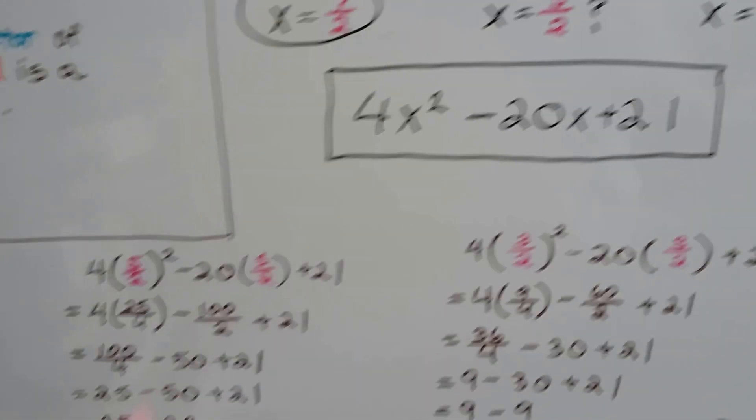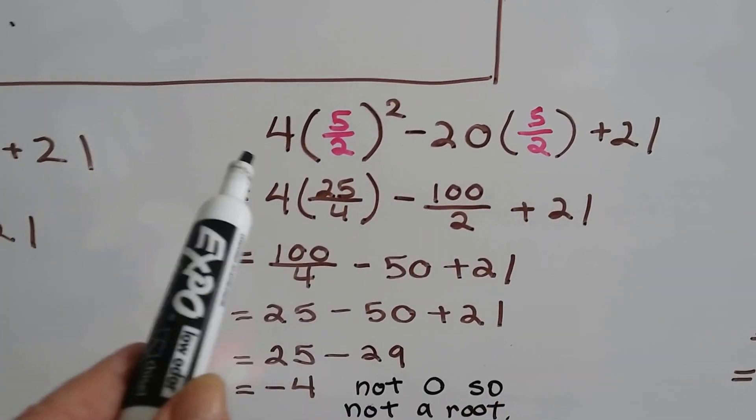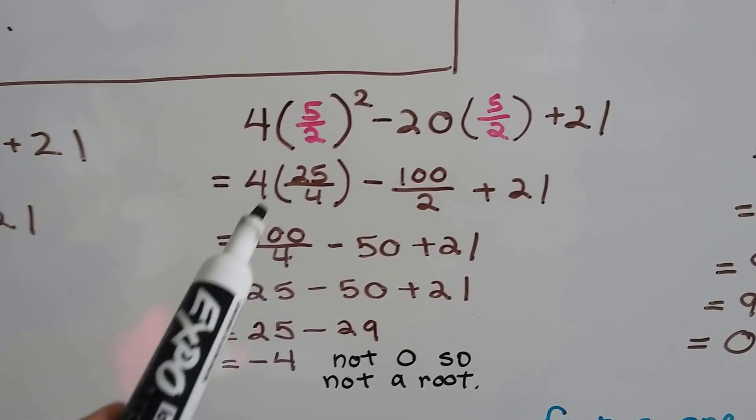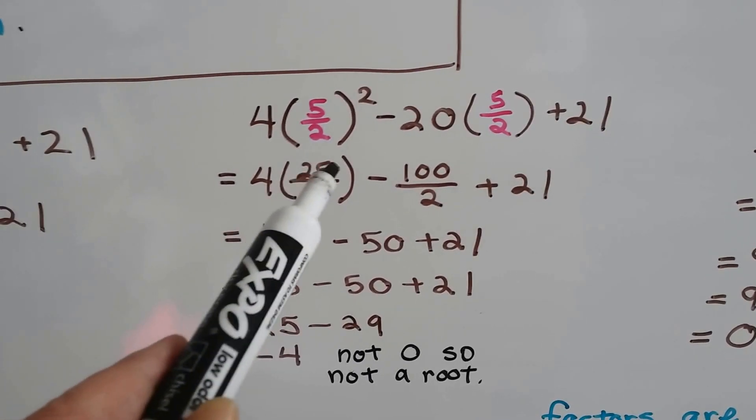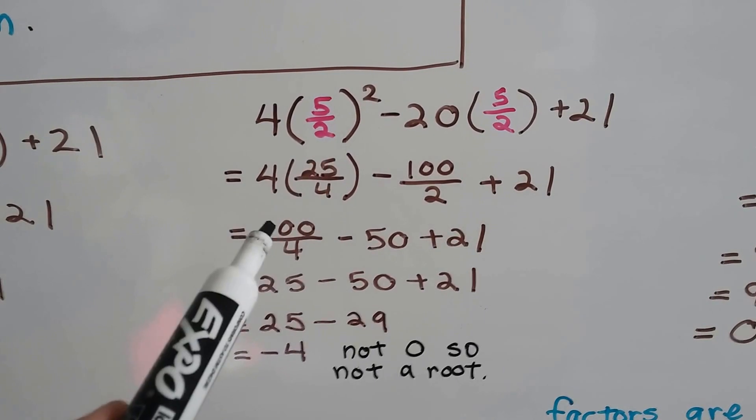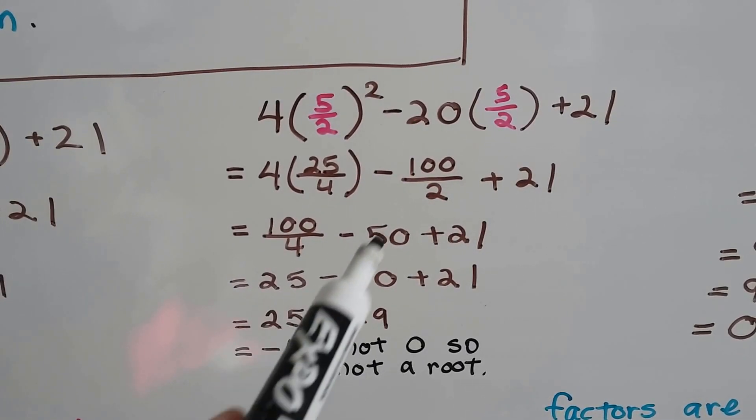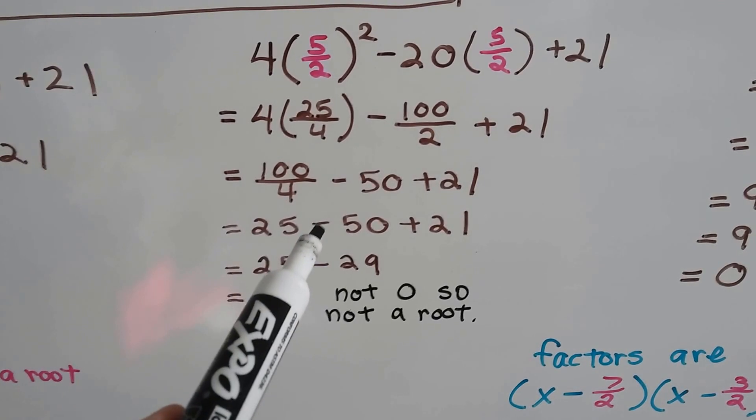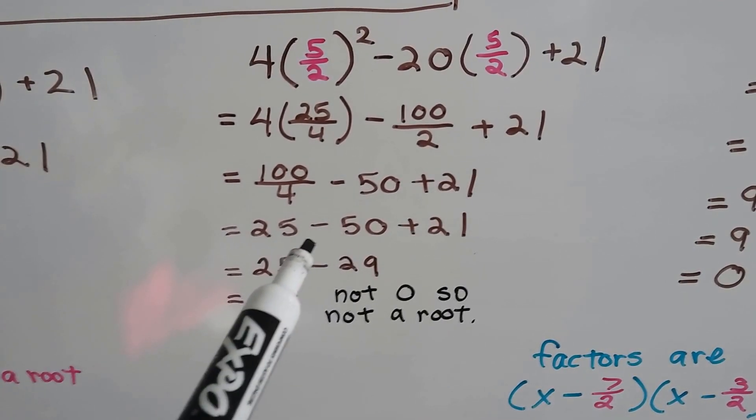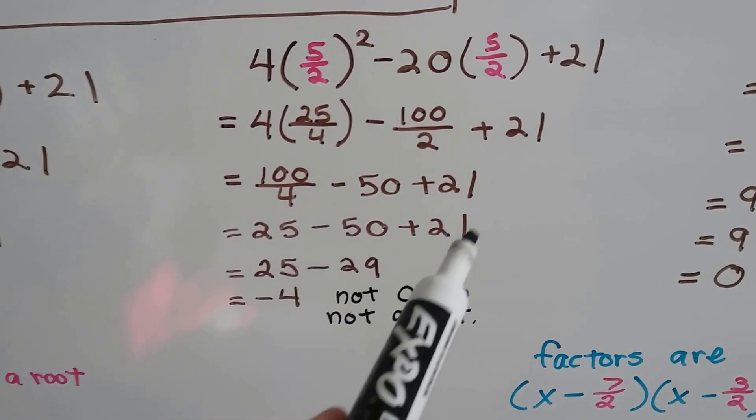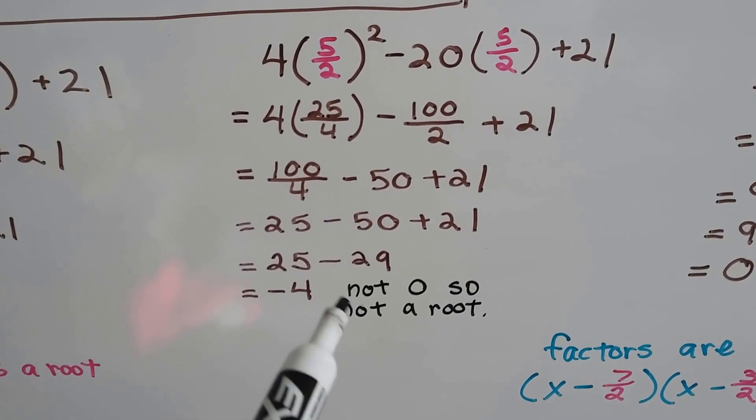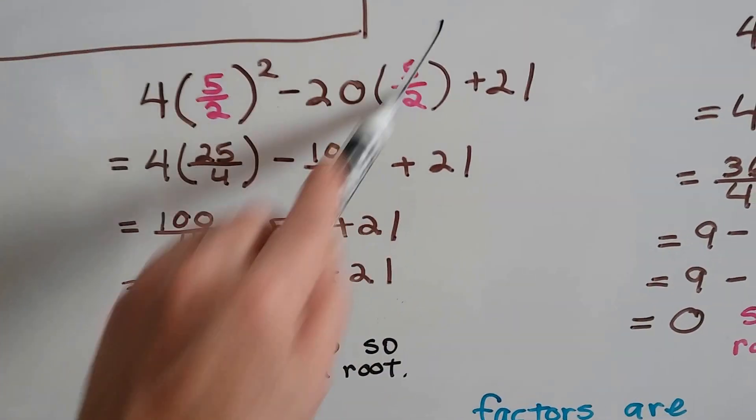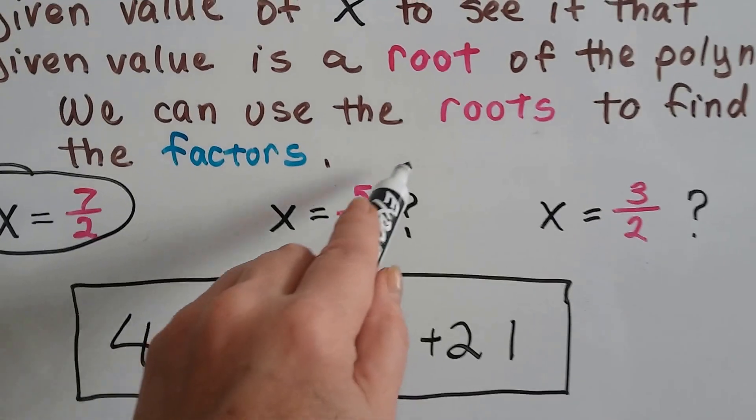Now let's try 5 halves. We plug 5 halves in to the polynomial. And we get 25 over 4. And we can cancel out again. So this 25 over 4 times 4 would be 25. Well, or we could do it the old way and go 4 times 25 is 100 over 4, which simplifies to 25. 100 over 2 is 50. So we have minus 50 plus 21. And 25 minus 50 plus 21 is like saying 25 minus 29. This equals 29. Negative 50 plus 21 is negative 29. And 25 minus a 29 is a negative 4. That's not a 0. So that's not a root. So that didn't work. So this is a no.